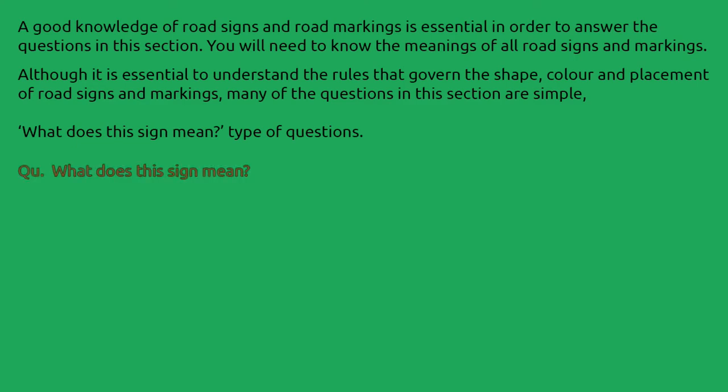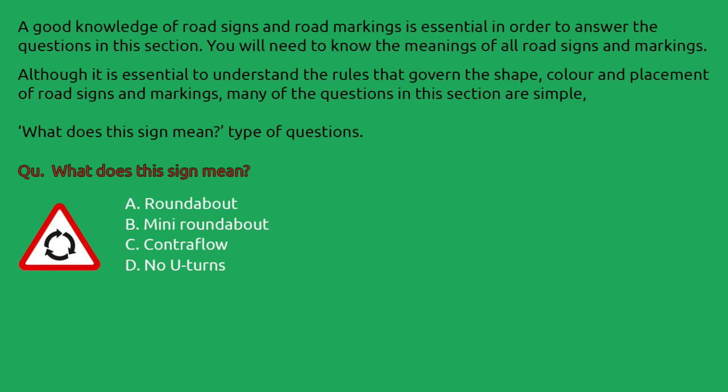For example: what does this sign mean? A) roundabout, B) mini roundabout, C) contraflow, D) no U-turns. The correct answer is A, roundabout.